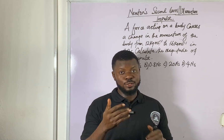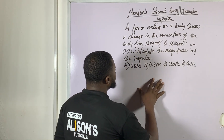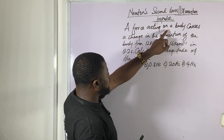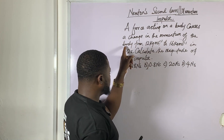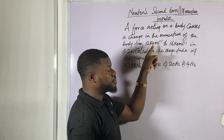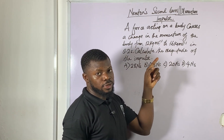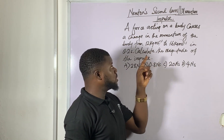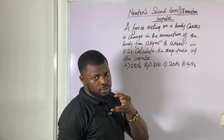I am actually now QuickPhysic. I am going to run this one now. You can see a force acting on the body causes a change in the momentum of the body from 12 kilogram meter per second to 16 kilogram meter per second. Take note: 16 kilogram meter per second, and the unit for momentum.